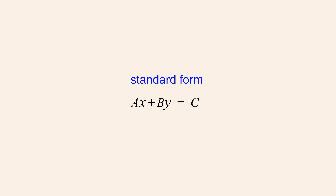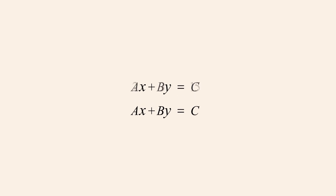When solving a system of linear equations using the elimination method, the equations are normally written in standard form. As we saw in the lecture on standard form, equations in two variables x and y are written with a single x-term and y-term on the left side and a single constant on the right. So let's say we have a system of two linear equations we wish to solve.